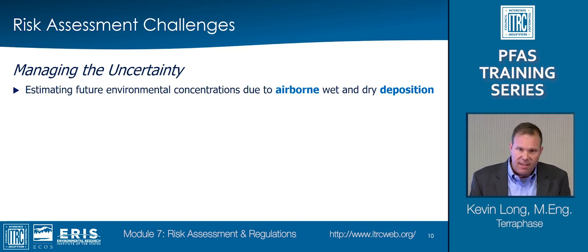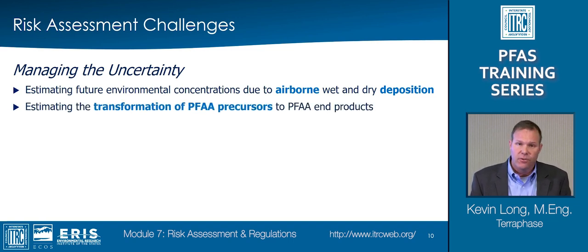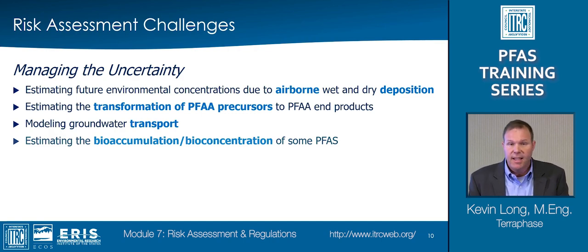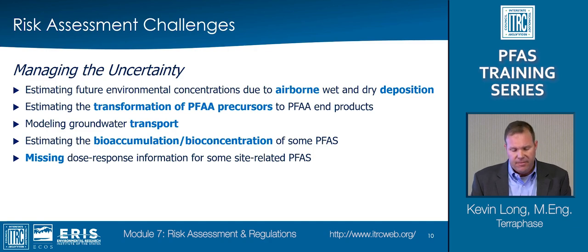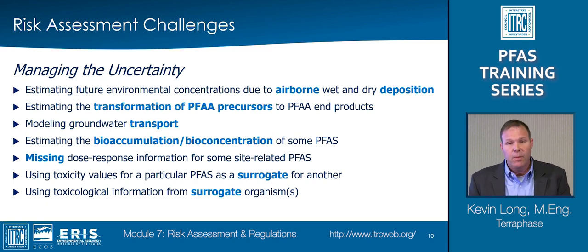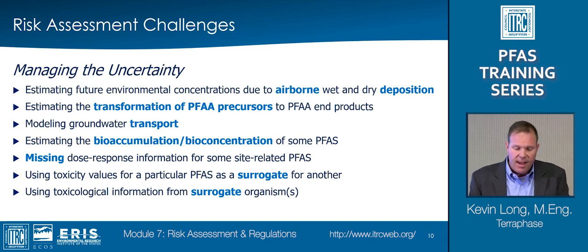Depending on the methodologies and assumptions used in a particular site-specific risk assessment, the potential critical uncertainties can include estimating future environmental concentrations due to airborne deposition, estimating the transformation of precursors into PFAA terminal end products, modeling groundwater transport — considering such factors as chemical-specific retardation and back diffusion — estimating bioconcentration and bioaccumulation of PFAS in a particular animal or plant or via food chain modeling, handling missing toxicity or dose-response information for some site-related PFAS, using toxicity values for a particular PFAS as a surrogate for another, and using information from surrogate organisms to evaluate potential risks for organisms for which toxicity studies do not exist. Each of these critical uncertainties is discussed in detail in ITRC's PFAS technical regulatory guidance document.